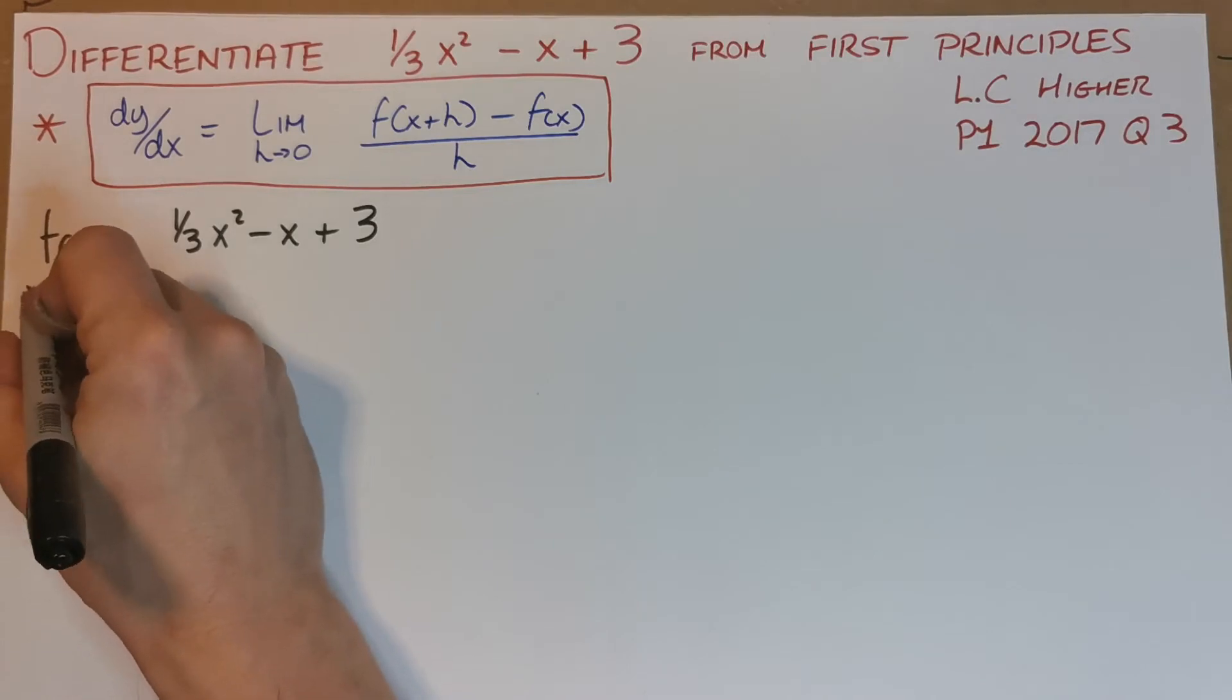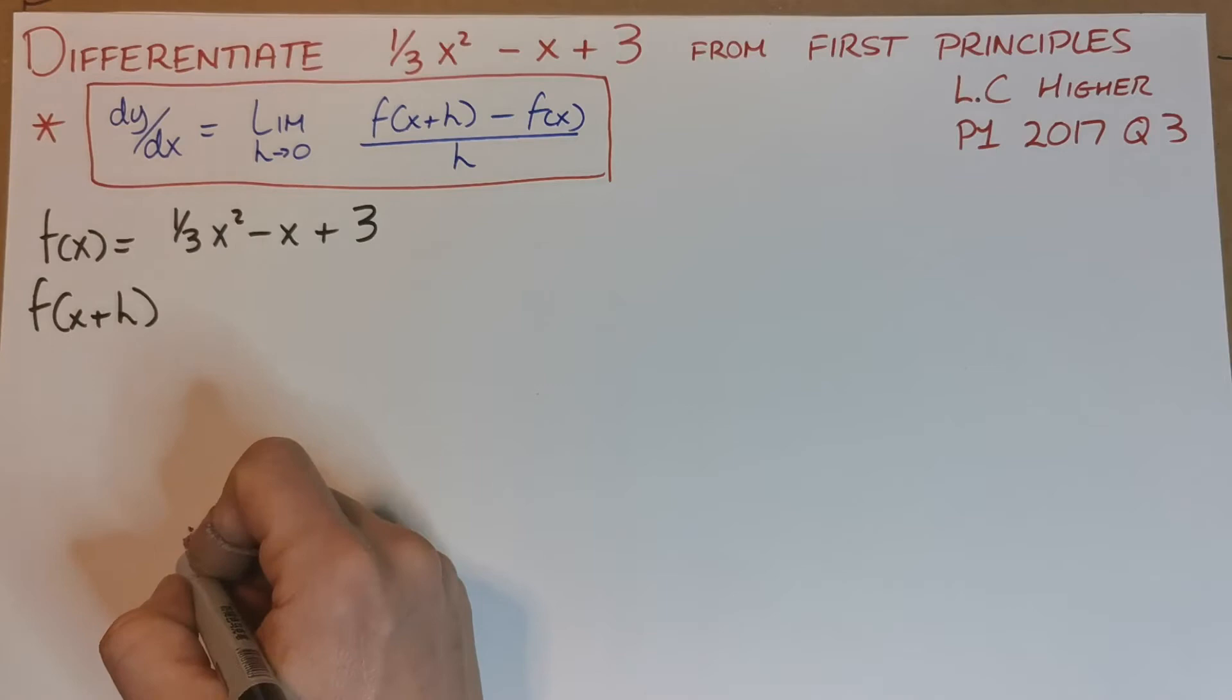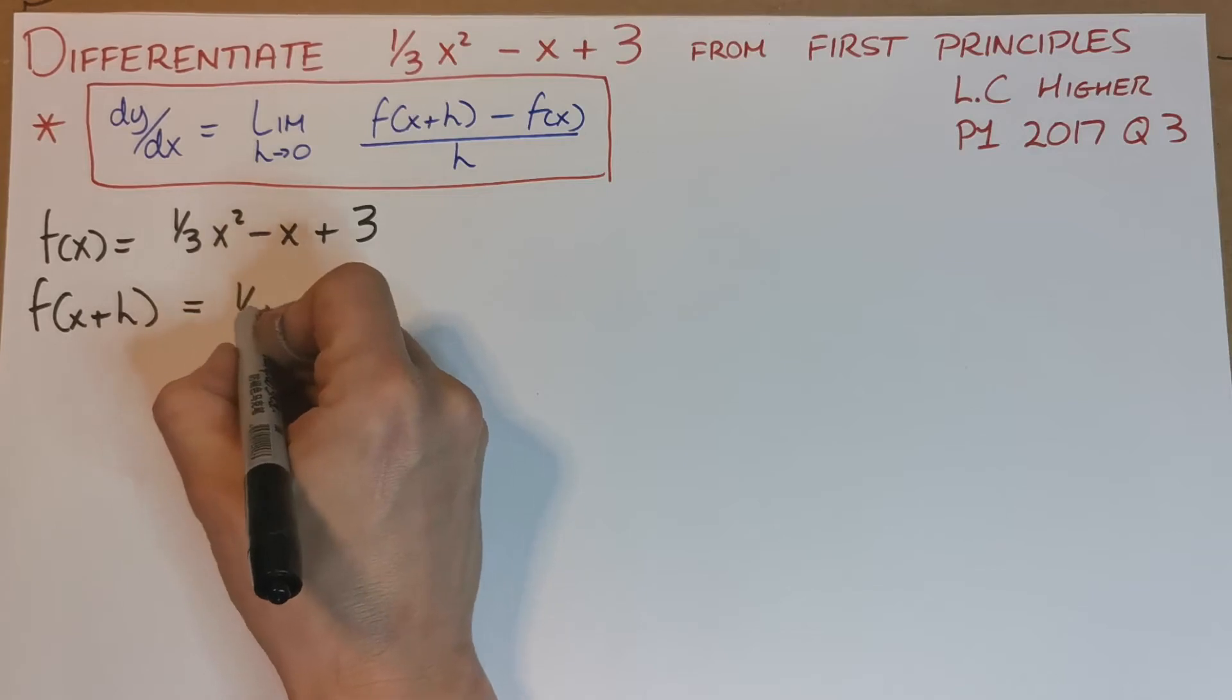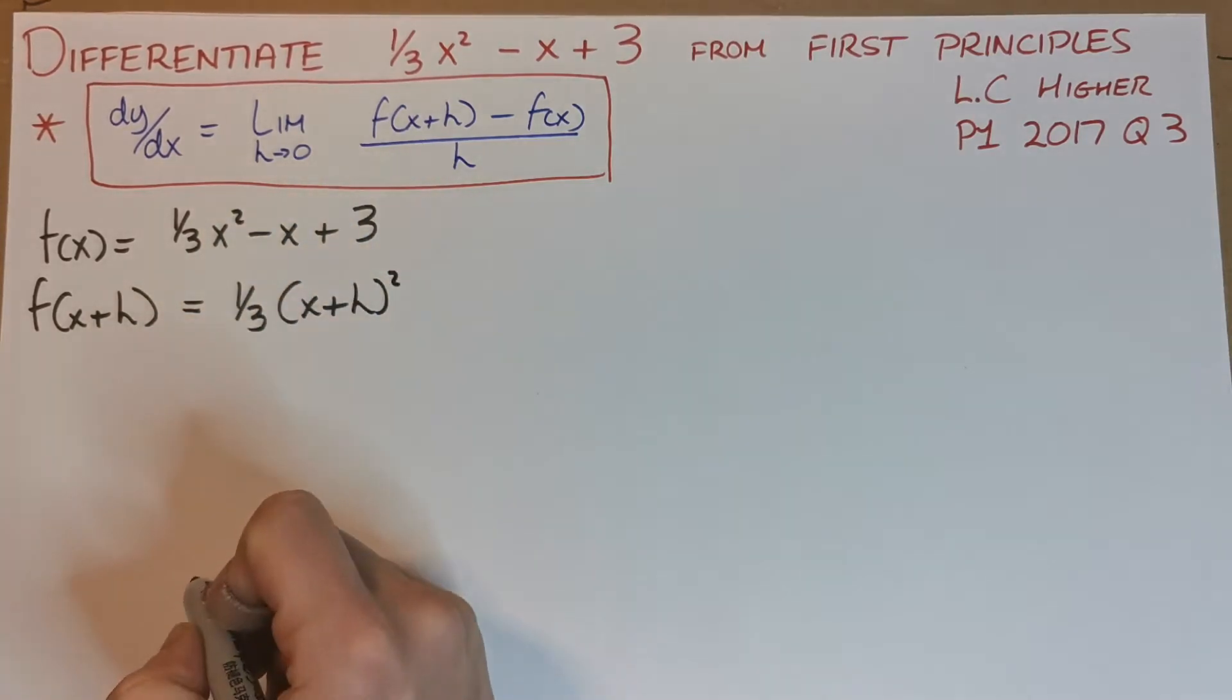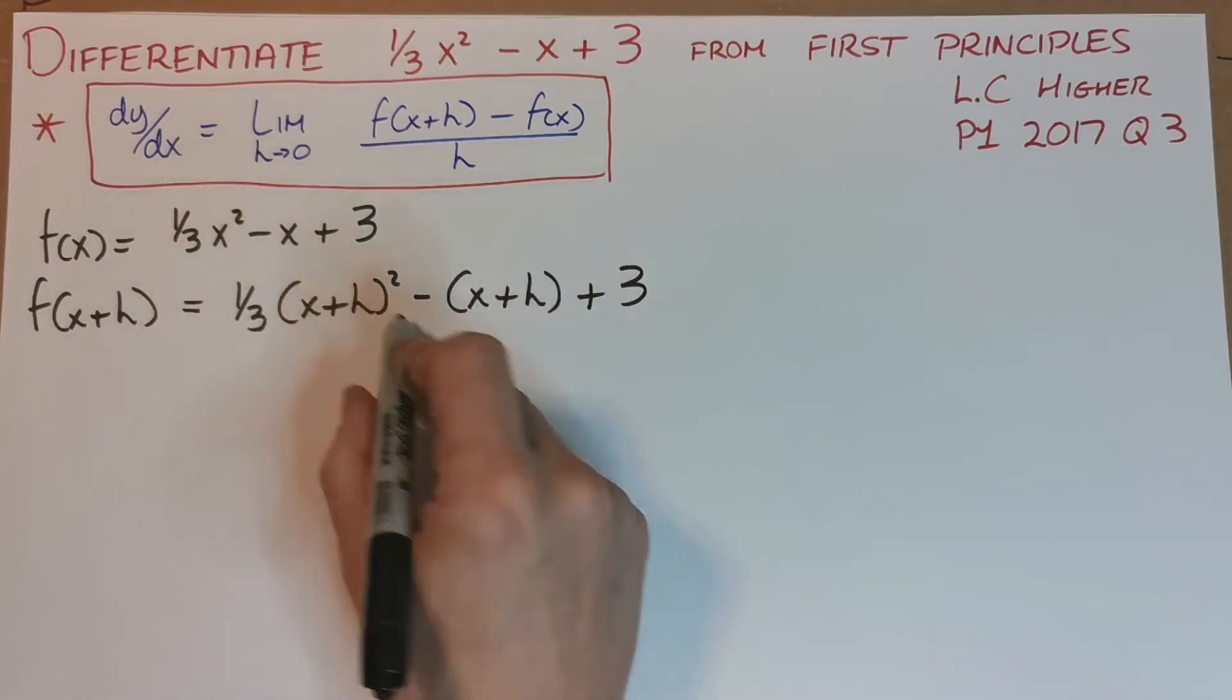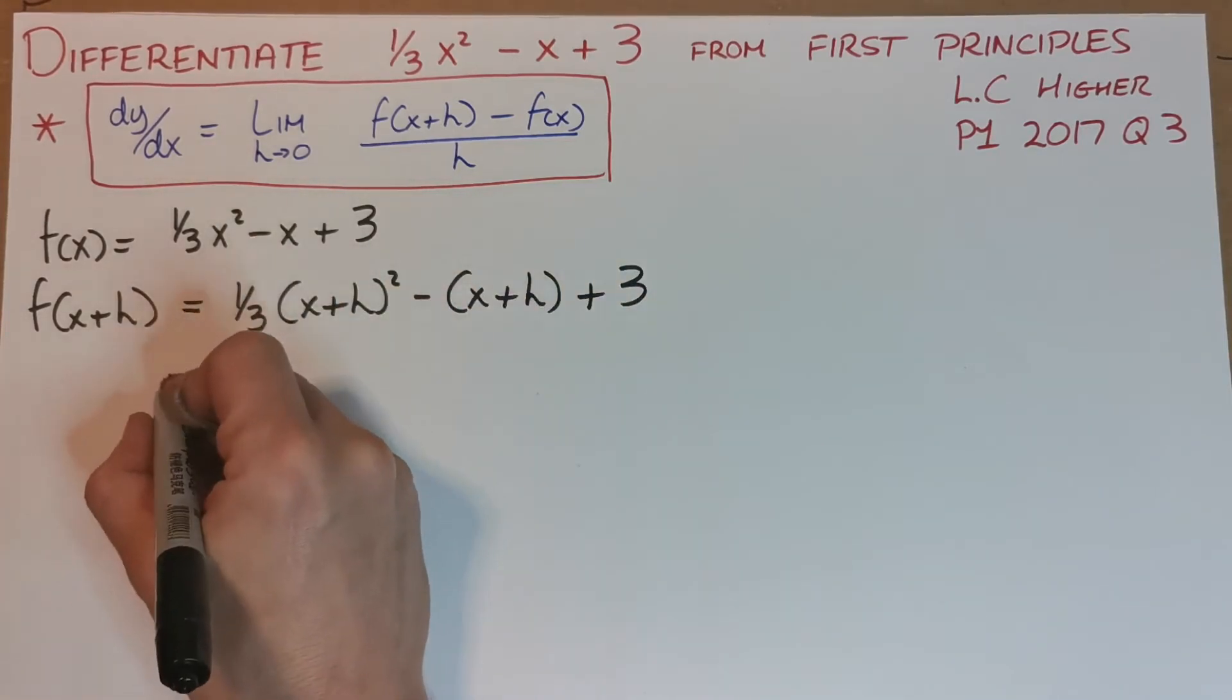It's maybe not going to be that pretty, but let's have a look. Everywhere there's an x, we're going to replace it by x+h. So that's going to be (1/3)(x+h)² and then minus (x+h). It's always a good idea to put your variables in brackets when you're changing them, because that minus affects both the x and the h.